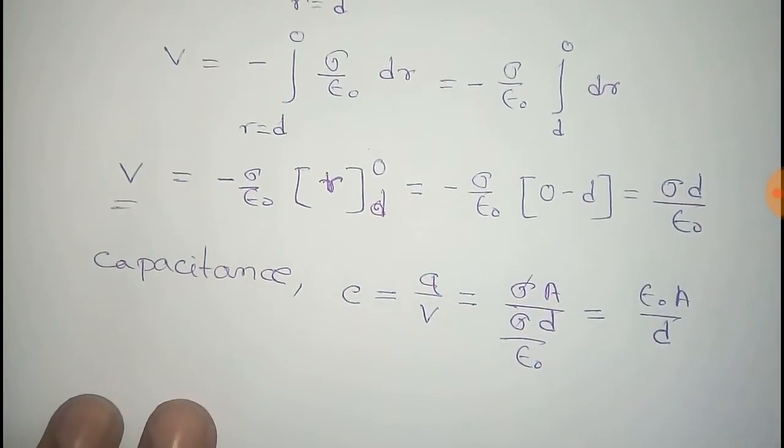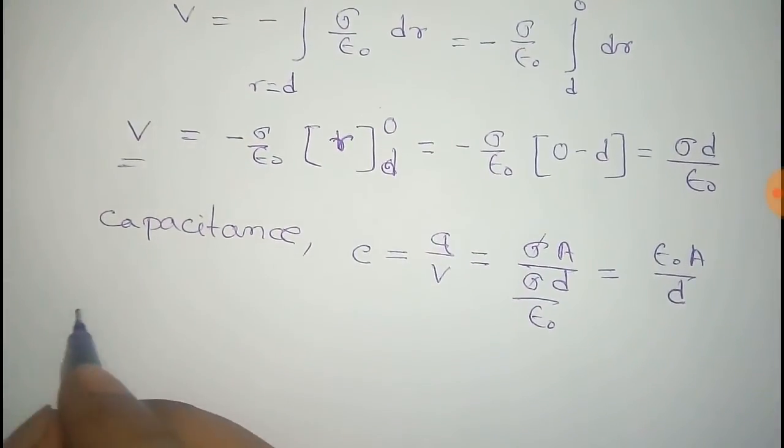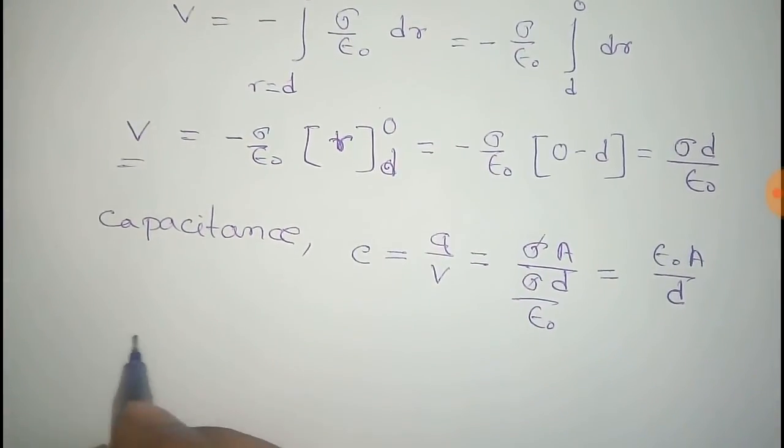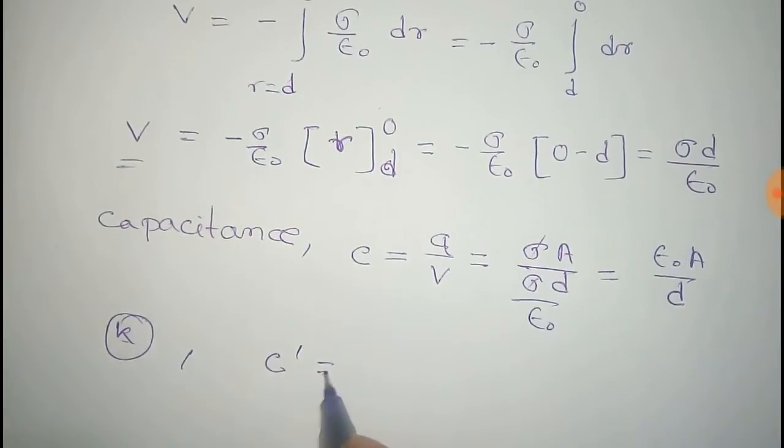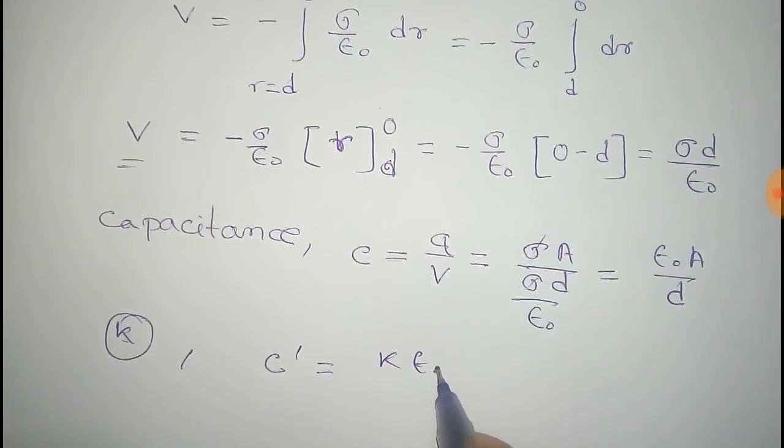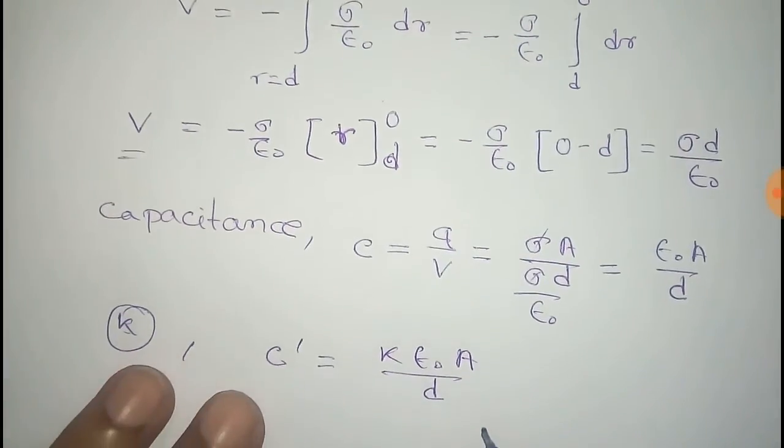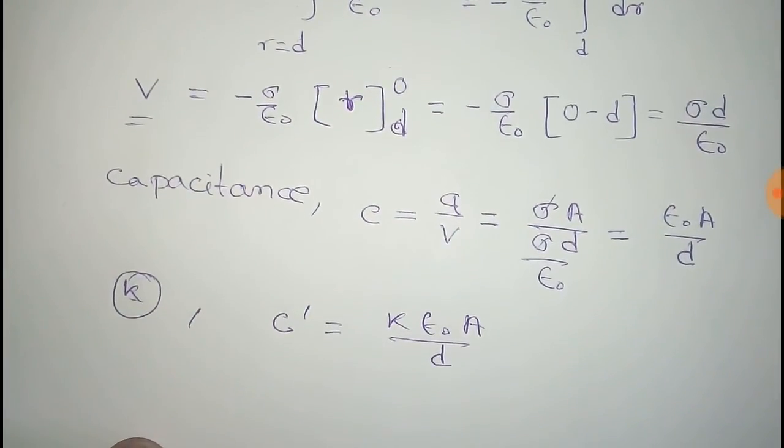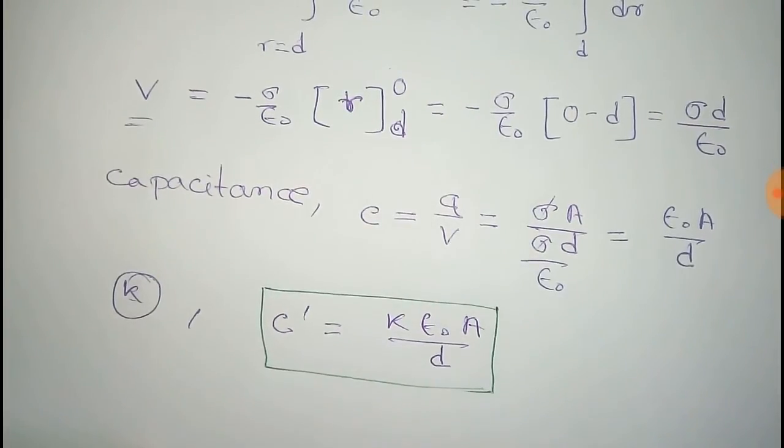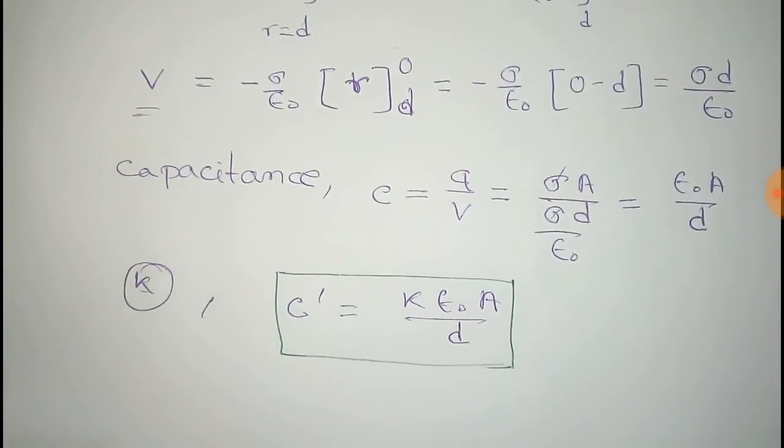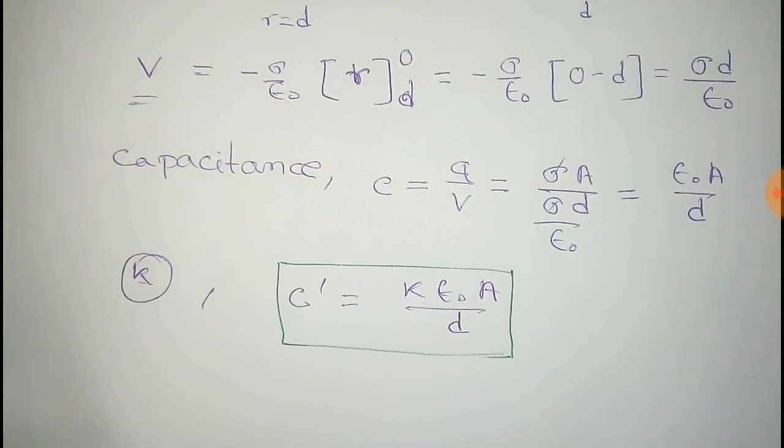Now if you consider a medium of permittivity k between the two plates, then the capacitance for this case will be kε₀A by d, because it will be multiplied with the k term. So that is the expression of capacitance for parallel plate capacitor with a medium of permittivity k.